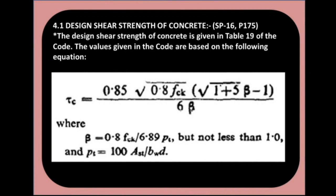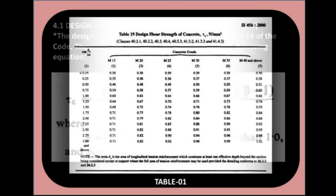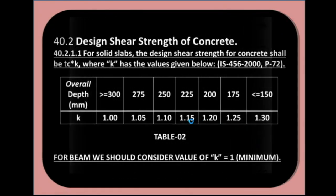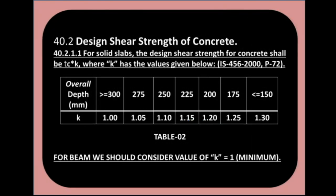The design shear strength of concrete is given in Table 19 of the code based on the following equation. This table gives values of Tau C on the basis of percentage of steel provided and grade of concrete. For solid slab, the design shear strength of concrete is Tau C multiplied by K, where K has the value given in IS-456-2000 page 72. For beam, we should consider K equal to 1, which is the minimum.